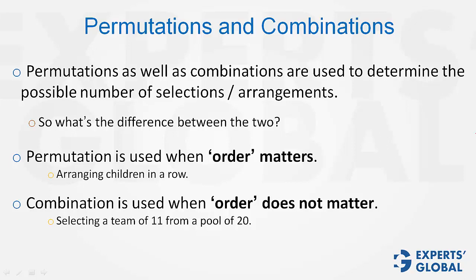If the question were selecting a team of 11 from a pool of 20 and then giving them a number from 1 to 11, then the answer would be 20P11 because now order matters. So either 20P11 directly, or first 20C11 for selecting 11 team members and then 11 factorial for deciding the order — that is, 20C11 multiplied by 11 factorial, which equals 20P11.